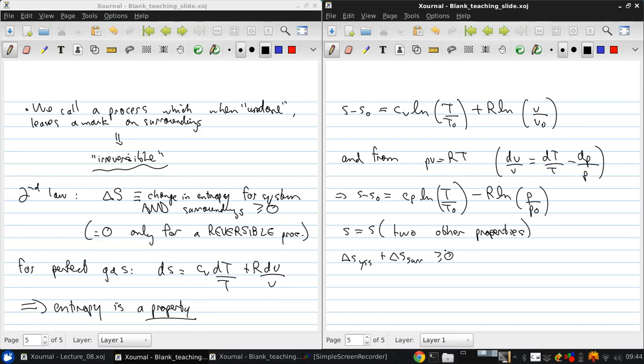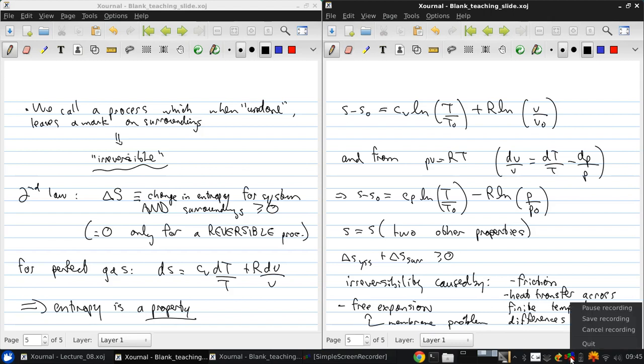So a reversible process where this equality holds here is the most efficient type of process that's possible. But in the real world, irreversibility is the name of the game and is caused by unavoidable things like friction, heat transfer across finite temperature differences, and free expansions, that is expansion of a gas where no useful work is done, and this is like the membrane problem.